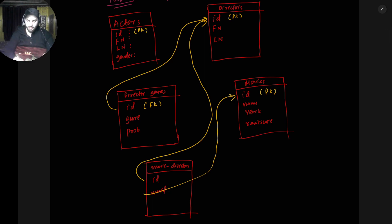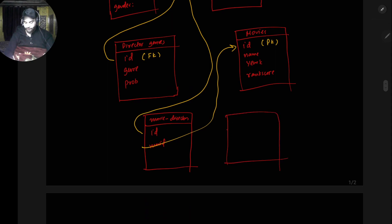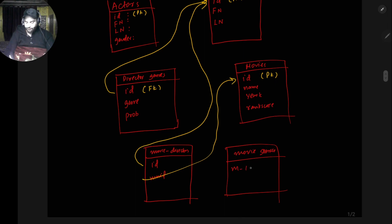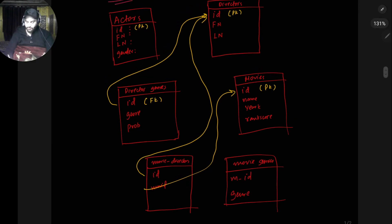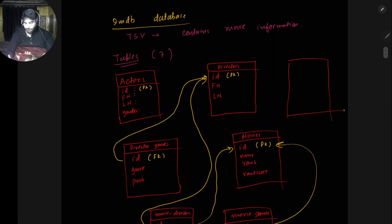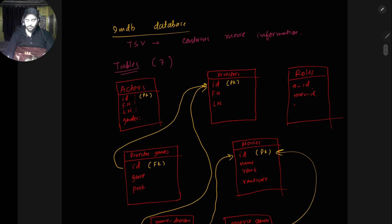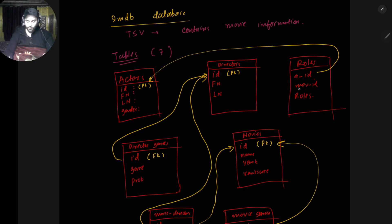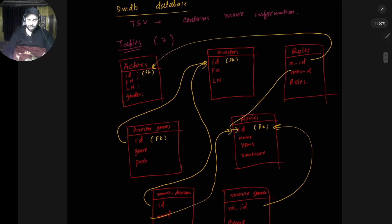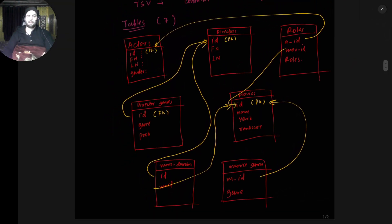Then we have another table called movie_genres, with two attributes: movie_id and genre. Again, movie_id is a foreign key to the movies table. Then the last table is roles — which actor got what role. Its attributes are actor_id, movie_id, and the role the actor got. Actor_id is a foreign key to the actors table and movie_id is a foreign key to the movies table. Can you see the whole schema we just created?